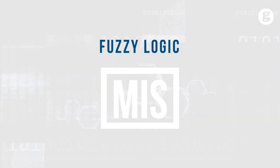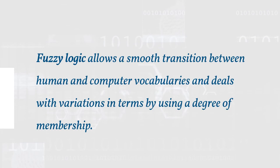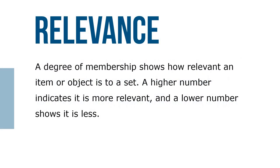Let's take a look at fuzzy logic. Fuzzy logic allows a smooth transition between human and computer vocabularies and deals with variation in terms by using a degree of membership. A degree of membership shows how relevant an item or an object is to a set. A higher number indicates it is more relevant and a lower number shows it is less relevant.